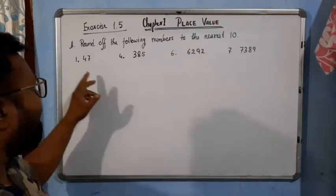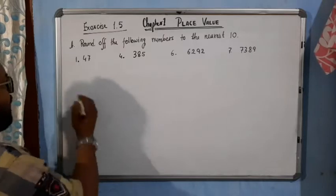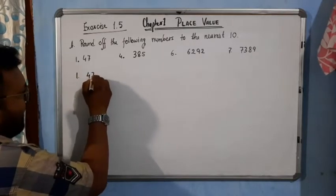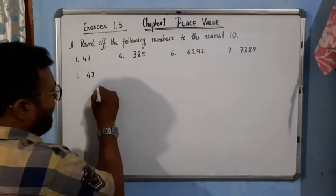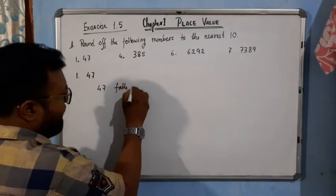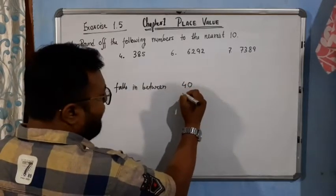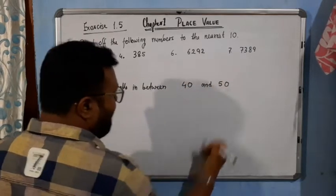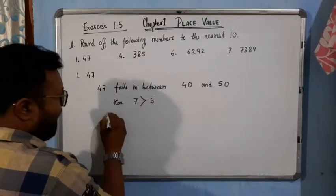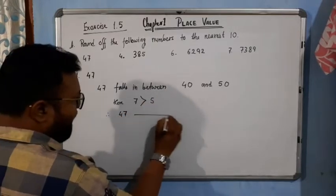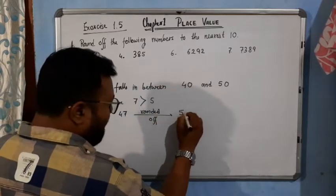There are a few examples given, and I have already selected only four: 1, 4, 6, and 7. Let's see how we will solve this. For the first one, 47. Nearest ten. So, 47 falls in between 40 and 50. Here, 7 is greater than 5. Therefore,